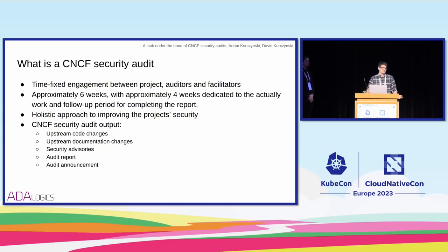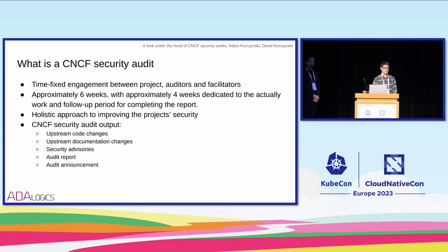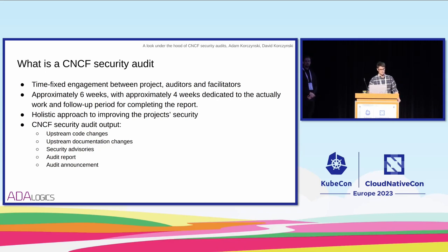In a more pragmatic way, the output of a CNCF security audit is a set of upstream code changes — either fixes or something of that nature — as well as upstream documentation changes. For example, if you deploy a project in a default way that has some insecure settings, this needs to be specified. The output also includes a list of security advisories detailing some of the findings, an audit report, and an audit announcement, which were the links Adam showed.